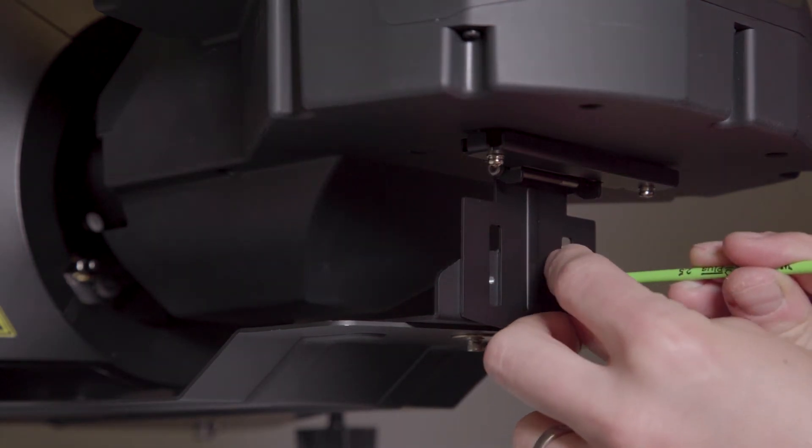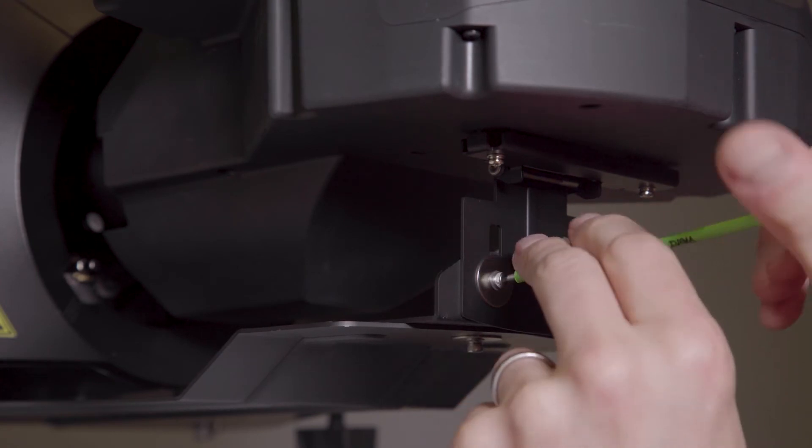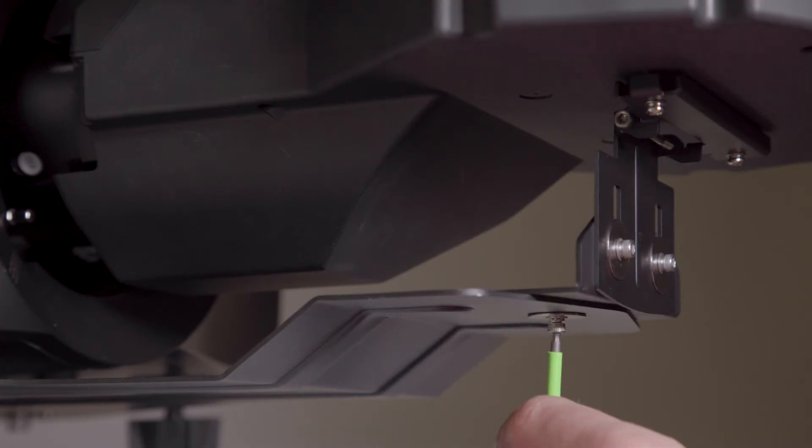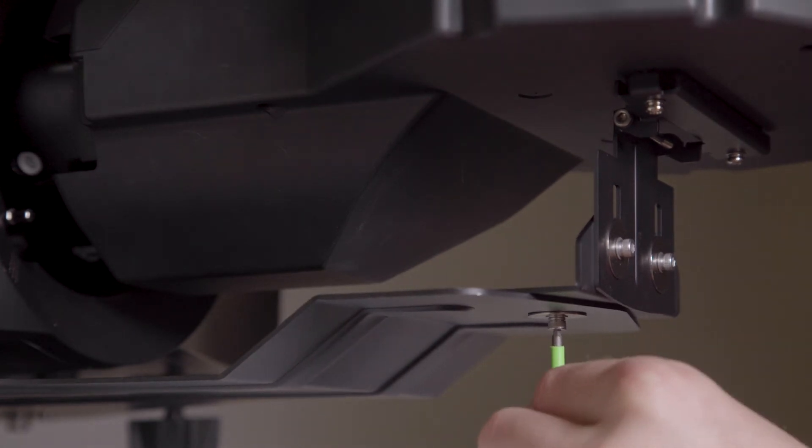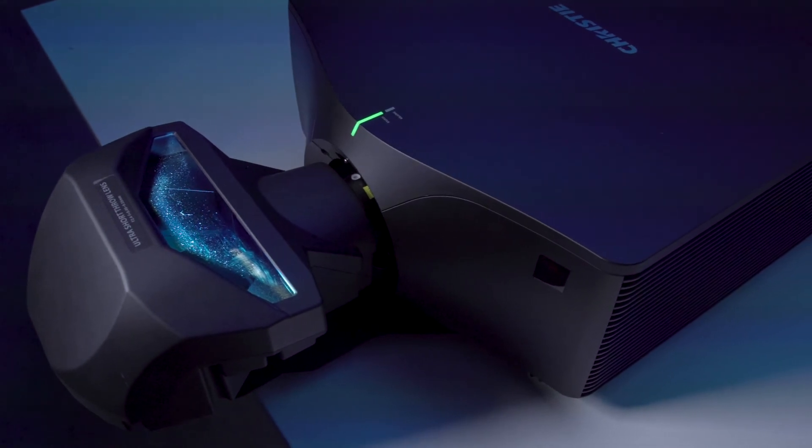To complete the installation you need to safely secure the lens support bracket. Screw in two M3 X8 hex screws and two M3 washers. Now you can finally tighten the M3 screw. Now your Christie UST lens is ready to use.